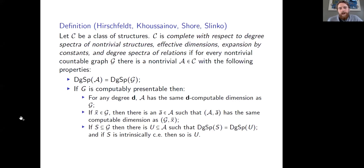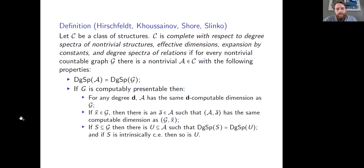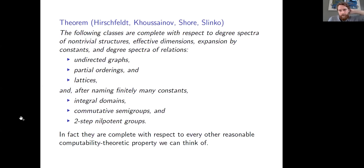Why graphs? Graphs themselves are universal — if you take any structure of any kind, you can code it up by a graph. Model theorists have known for many decades that you can always code any kind of structure into a graph. So instead of saying any countable graph, you could say any countable structure of any kind. They then showed that graphs, partial orderings, lattices, integral domains, commutative semi-groups, and two-step nilpotent groups are all complete with respect to this list of properties. Not only complete for this specific list, but for any other reasonably computable theoretic property you can think of.